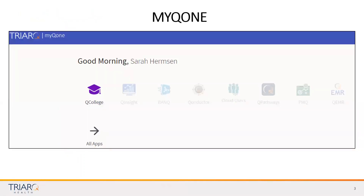The first thing I want to start with is MyQ1. Q College is just one of several products that is part of MyQ1. MyQ1 is an incredible unified user experience for people who are Triarch clients to see the products that they have. We can deploy our services faster, updates are right through the screen, and with single sign-on, you only have to log on once to MyQ1 and you're all set. The security is better and it's a simpler, easier way for you to access this database.